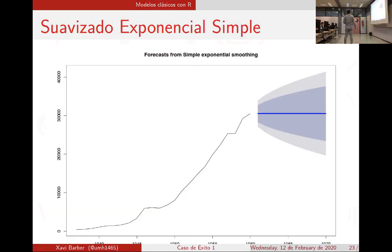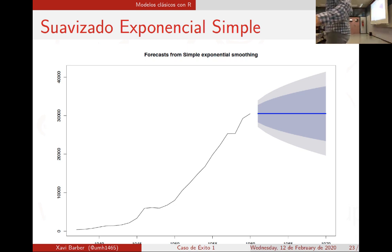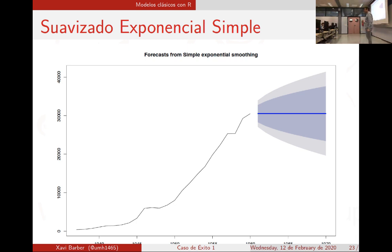El suavizado exponencial: ¿qué problema le hemos visto? La predicción es la predicción de un niño de primaria. Tú dices 'dibújame una recta' y te la dibuja; eso es el suavizado exponencial: acertará una, pero la siguiente estimación puntual puede estar muy lejos. Más vale decirle al jefe entre qué valores va a ir, porque si no va a decir: '¿por qué me dices que voy a vender todos los días cinco coches?'